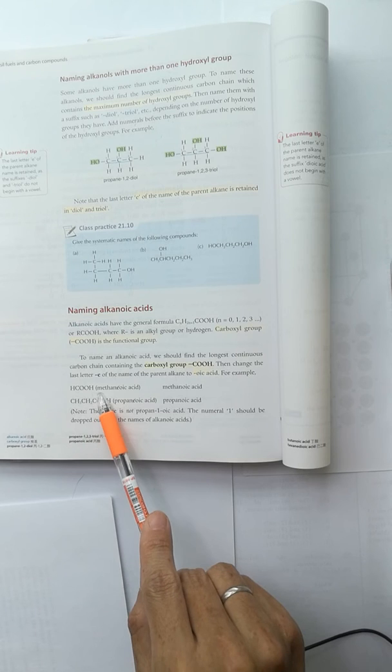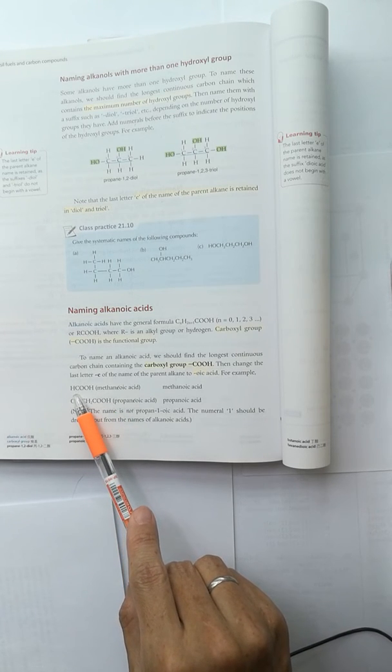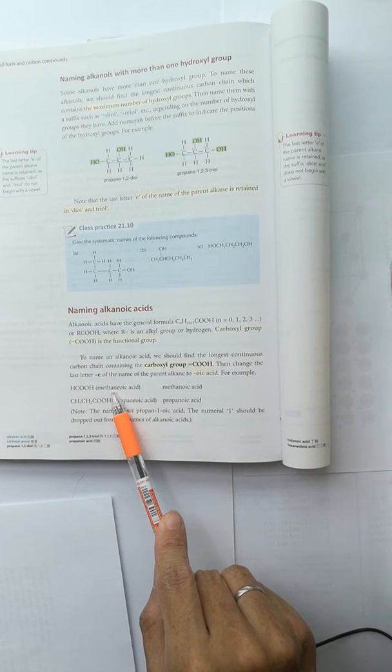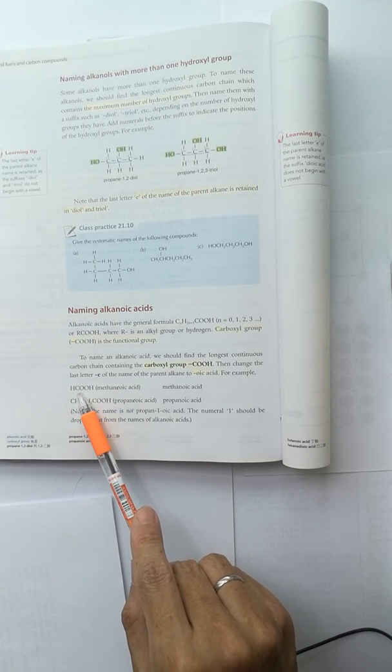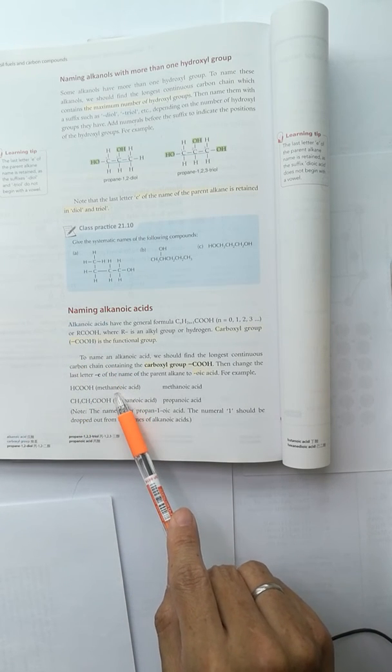Only one carbon, it is methane, no double bond between the carbon atoms, ANE. And it is oic acid, E omitted.